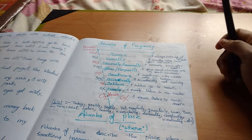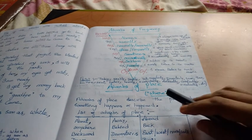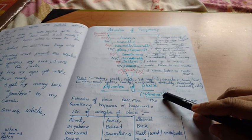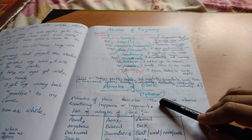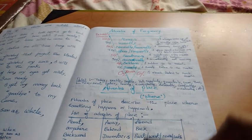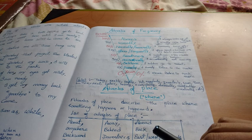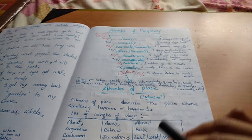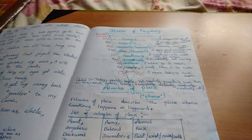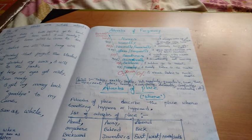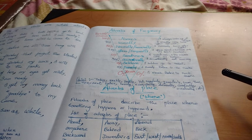Now we will learn adverbs of place. 'Where' is the question word, but it also acts as an adverb, and sometimes as an adjective or pronoun. Adverbs of place describe where an action happens — any action must have a place. If you are describing the place where an action took place, that description is called an adverb of place.